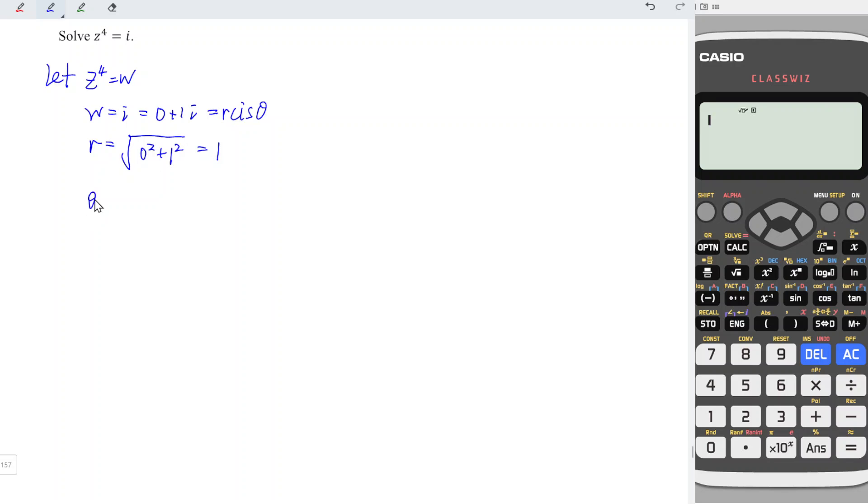And for theta is the argument, which is arc tangent y divided by x. If we do the conventional method, we will realize that we obtain 1 over 0, which is math error and we couldn't solve this. So instead of using this conventional method, we can actually make use of the Cartesian plane.